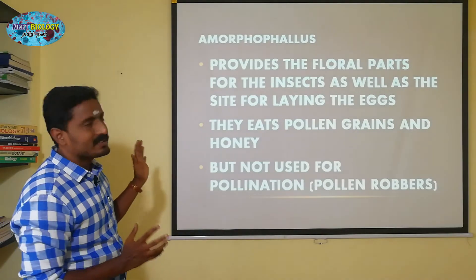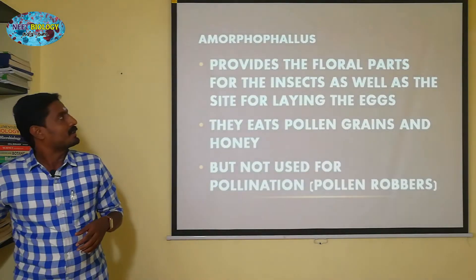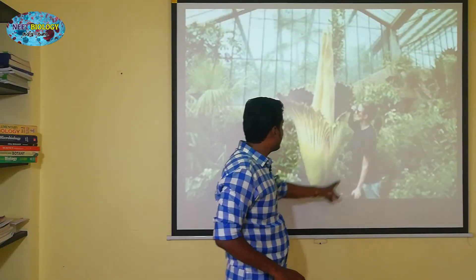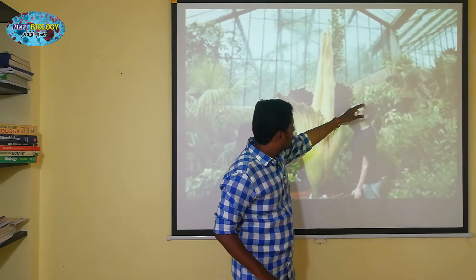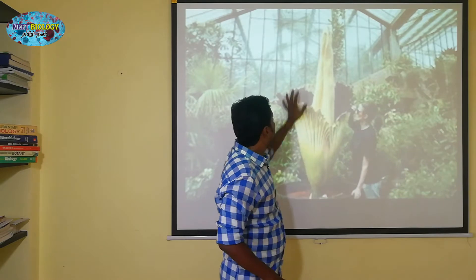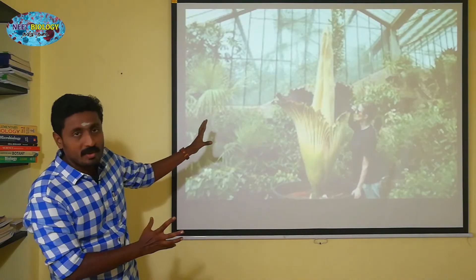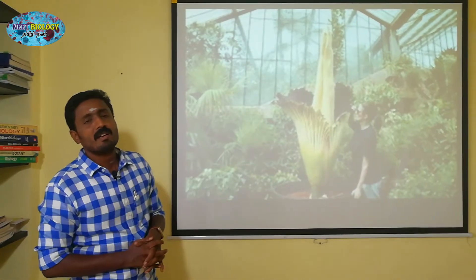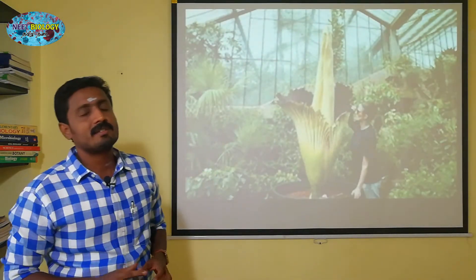This is the Amorphophallus plant. Amorphophallus is a variety of plants. It is a plant called Amorphophallus, or a flower. It is actually a total plant. In this total plant, there is a flower. We can talk about the variety of this Amorphophallus.